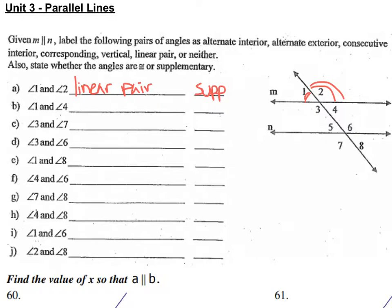If instead I look at angle 1 and angle 4, we know those are vertical angles, and vertical angles are congruent.